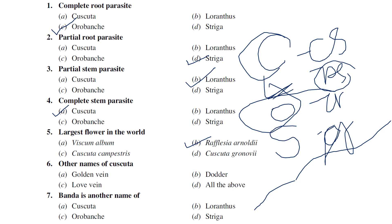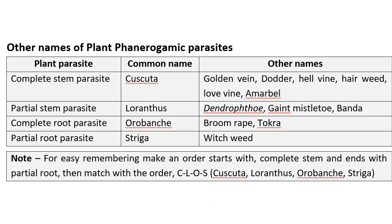The other names of Cuscuta include: golden weed, dodder, love weed — so the answer is all of the above. Banda is otherwise called Loranthus. The various other names of Cuscuta (complete stem parasite) include golden weed, dodder, helvine, hairweed, lewine, and Amarbel.